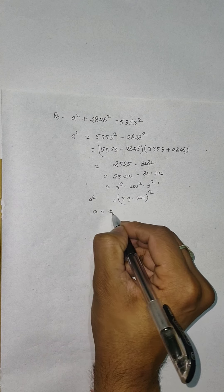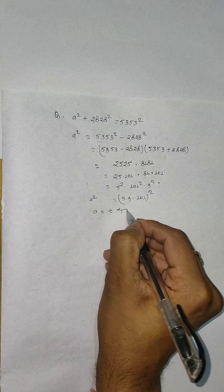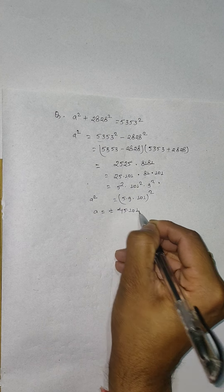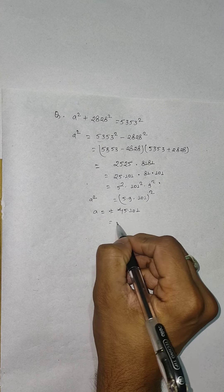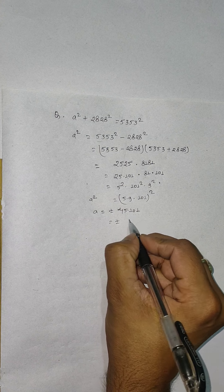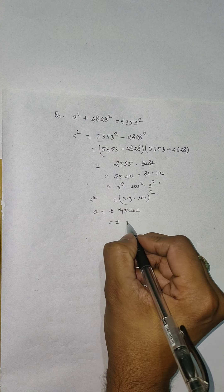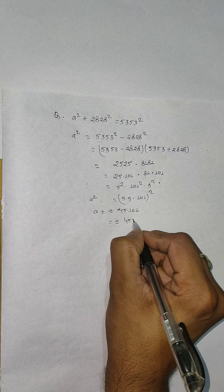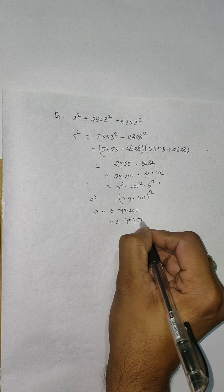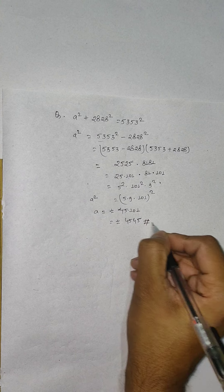So a = ±45 × 101. When you multiply 45 times 101, it becomes 4545. So this is our final answer. Thank you.